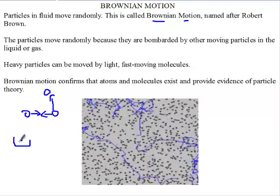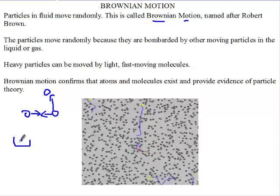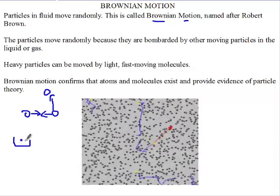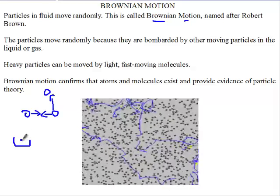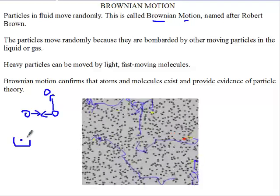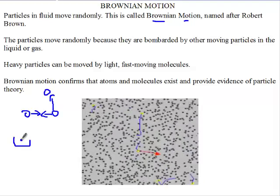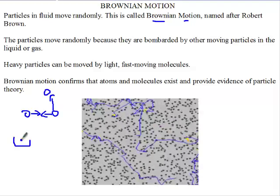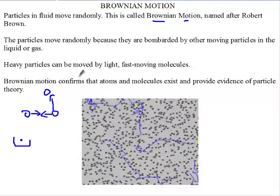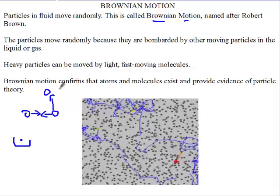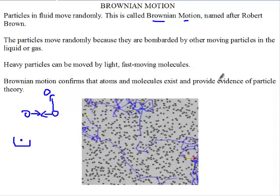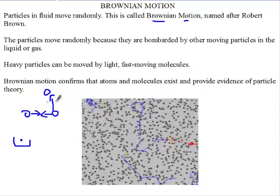When I say heavy, I'm talking relatively. One water molecule is very, very small and light, so in relation to the mass of the pollen, the pollen is heavier than the water molecule. Through collisions, the fast-moving water molecules can move these heavier particles. Brownian motion confirms that atoms and molecules exist and provides evidence of the particle theory.